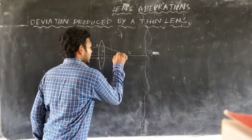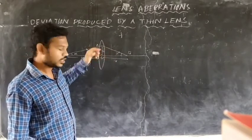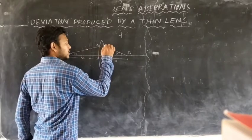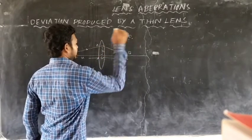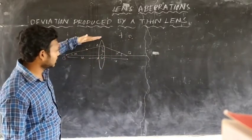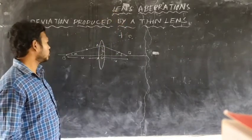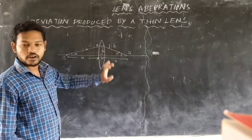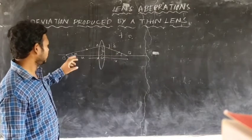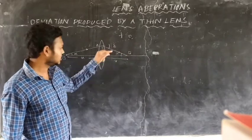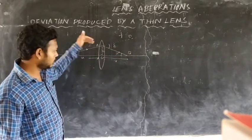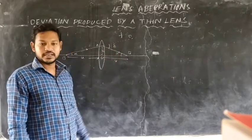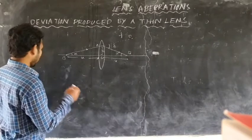Beta is the angle between the deviated or refracted light rays and the principal axis of the lens. If there is no lens, the incident light rays would travel in the direction of O-V. The angle between the actual path of the light rays and the deviated light rays is known as the angle of deviation, indicated by delta.